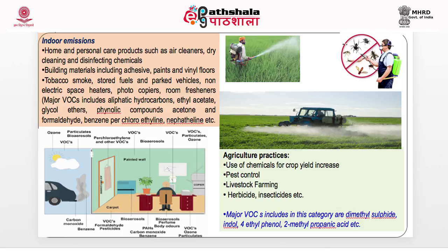Indoor pollution is most important because it directly affects the human body. Many household products emit volatile organic compounds, including personal care products, air cleaners, dry cleaning chemicals, disinfectants, and cosmetics. Building materials such as adhesives, paints, and vinyl floors, as well as tobacco smoke, stored fuels, and parked vehicles, are all indoor emission sources. The main indoor VOCs include aliphatic hydrocarbons, ethyl acetate, glycol ethers, pyrolytic compounds, acetone, formaldehyde, benzene, perchloroethylene, and naphthalene.